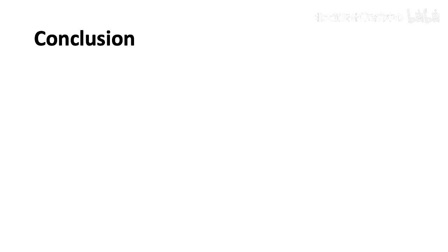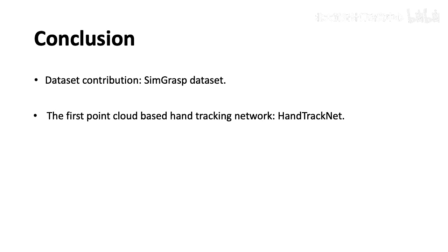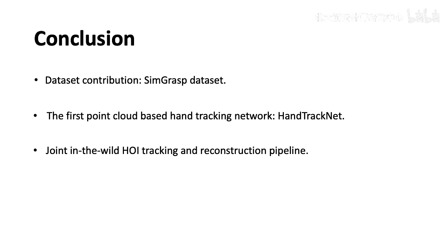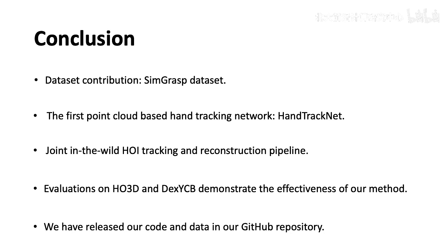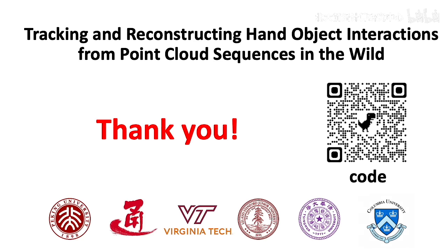To conclude, in this work we propose a large-scale dynamic HOI simulated dataset, SimGrasp, that captures sufficient diversity in realistic sensor noises and supports direct Sim-to-real generalization. For the first time, we propose a point cloud-based hand tracking network, HandTrackNet, that outperforms all previous single-frame networks. Furthermore, we build an online system that jointly tracks and reconstructs hand-object interactions, and our intensive experiments show that our method achieves the highest performance on both DEXYCB and HO3D datasets. We have released our code and data in our GitHub repository.